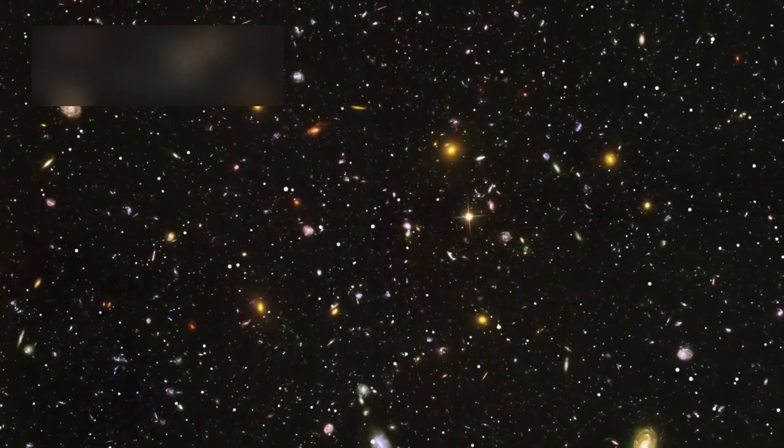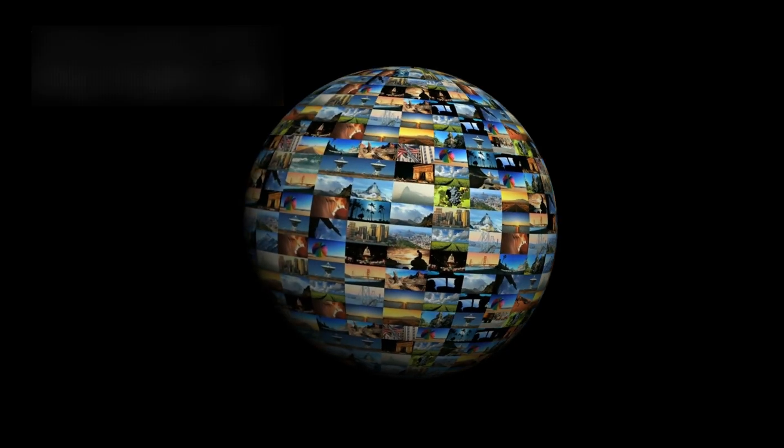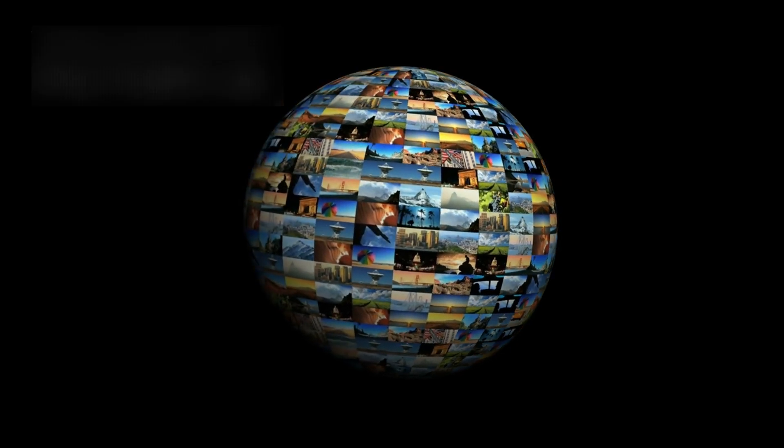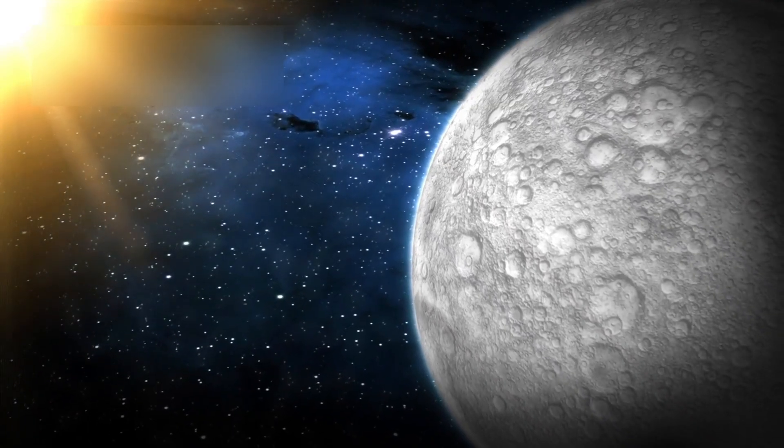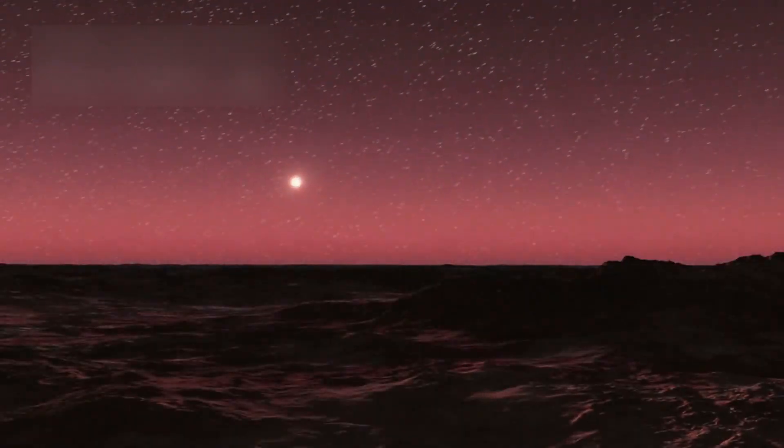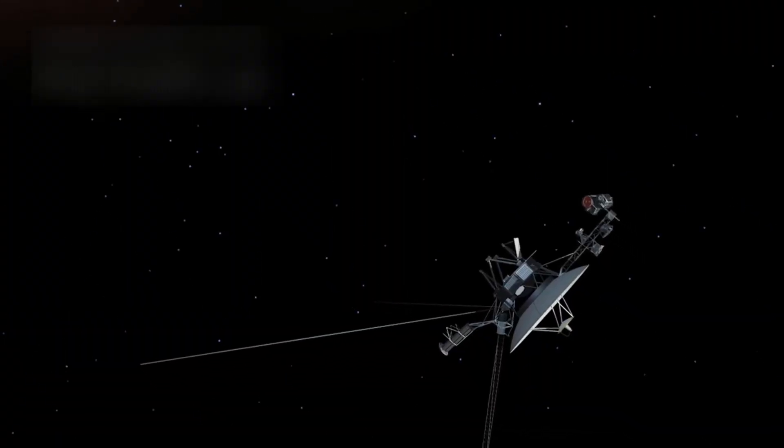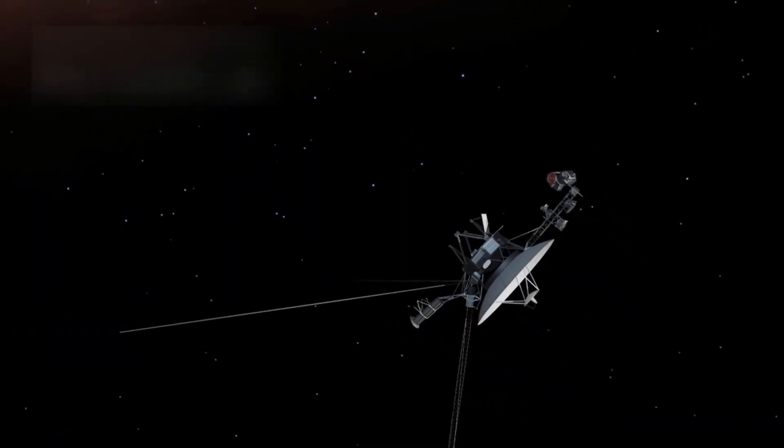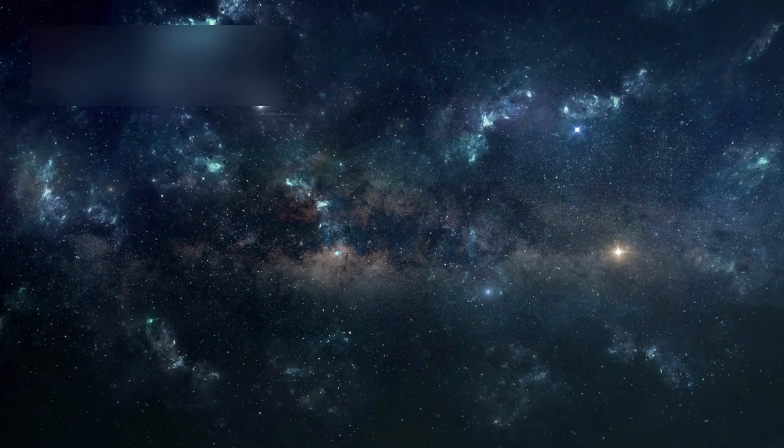We begin this journey by grasping distance. Driving around Earth's equator at highway speed would take more than two weeks. At that same pace, reaching the Moon would take five months, Mars 60 years, and Neptune over 4,000. Voyager 1, launched in 1977 and still racing through space, needed 35 years just to leave the solar system, a single small step beyond our doorstep.